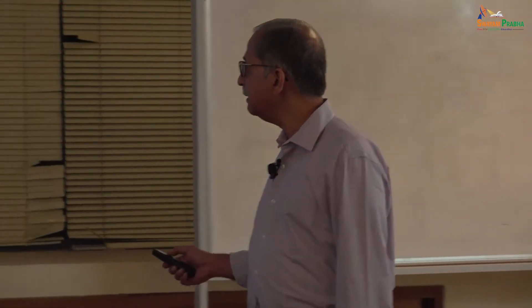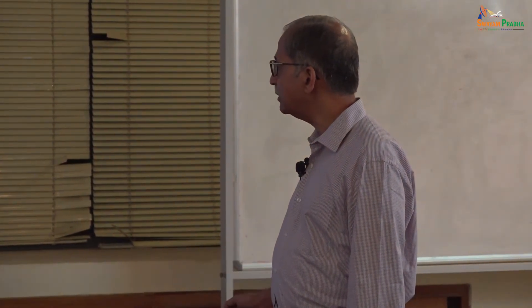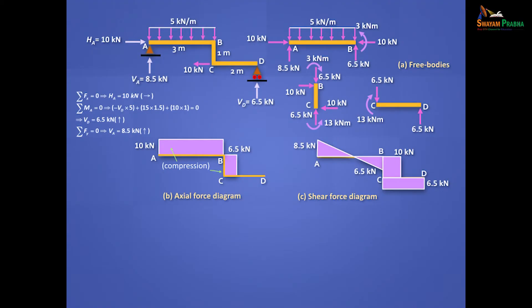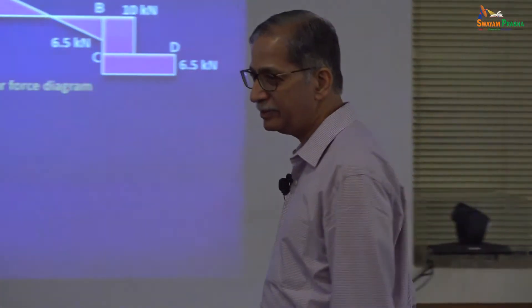Shear force diagram: you can see that you have shear force in all three beams. Take AB — 8.5 goes up, then there is a UDL which brings it down by 15, straight line. 15 minus 8.5 is 6.5 — so you get 6.5, that finishes AB. CD has a constant shear force of 6.5. And BC has a constant shear force of 10. Plus or minus is not important.